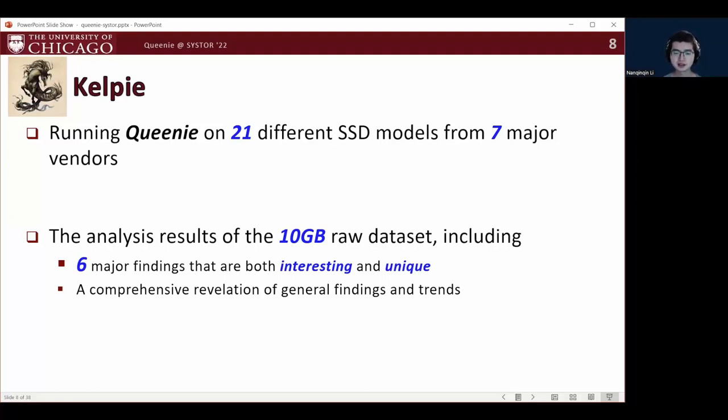By further analyzing the dataset, QINI reports six major findings that are considered interesting, unique, and even counterintuitive, with a revelation of many general findings and trends.